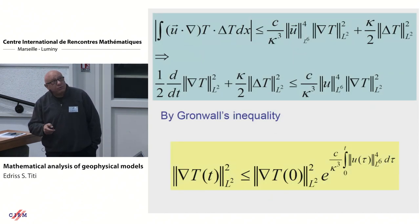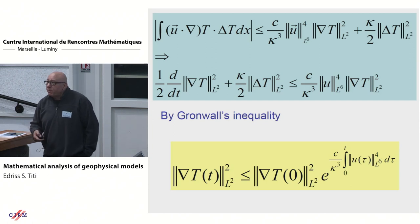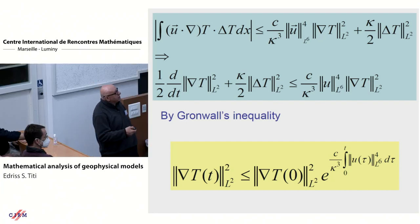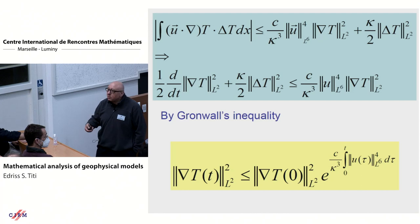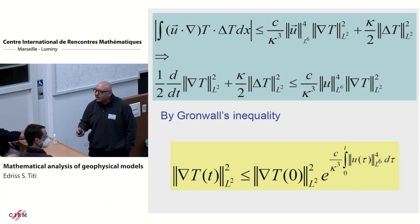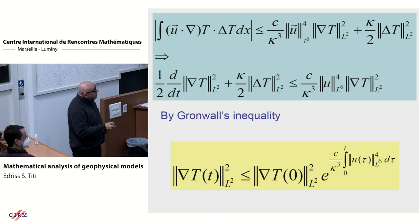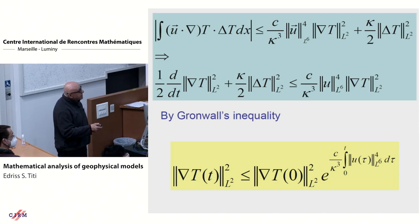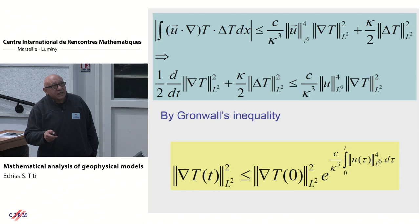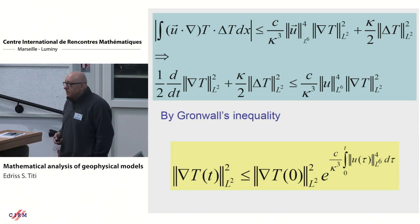This term — the Laplacian — I no longer need it. I have the time derivative, the same quantity, and a factor involving u. You multiply by the integrating factor, which is e to the integral of this term of u — what people call the Gronwall inequality. It's basically multiplying by the integrating factor. Then you conclude that the gradient of the temperature is bounded by the original gradient times e to the power of that integral.